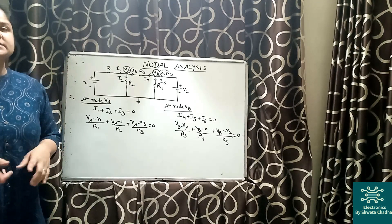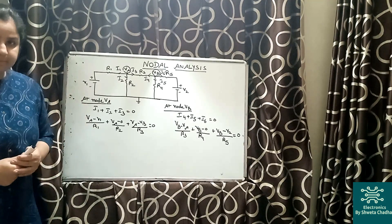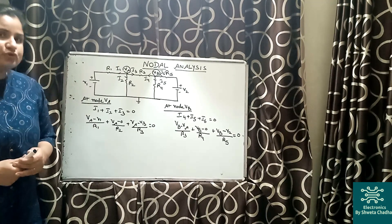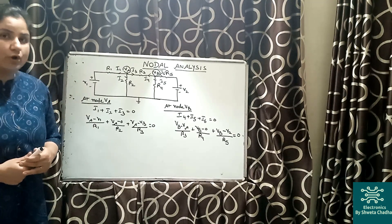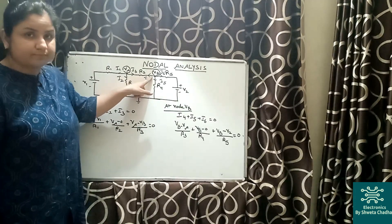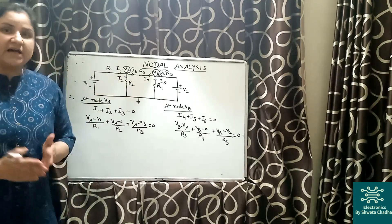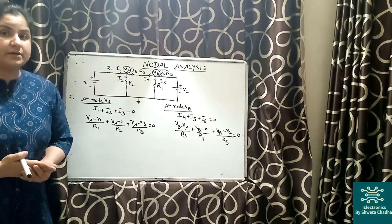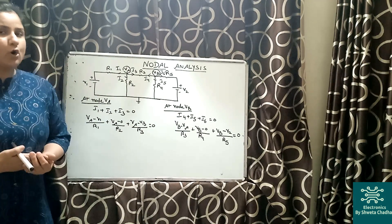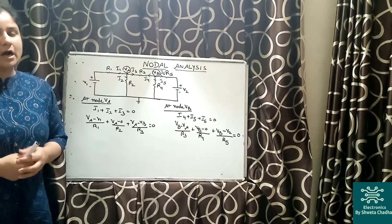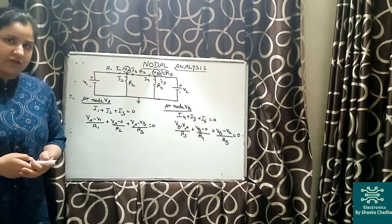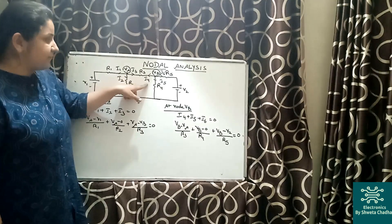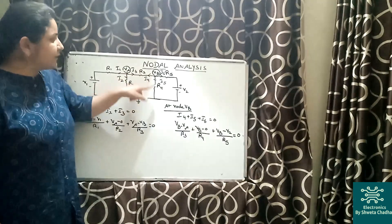So in this equation, everything will be available to you while solving the numericals except VA and VB. Similarly, let us try to write down the equation at node B. Again, as per the assumption, the voltage at node B is the highest potential of our circuit.